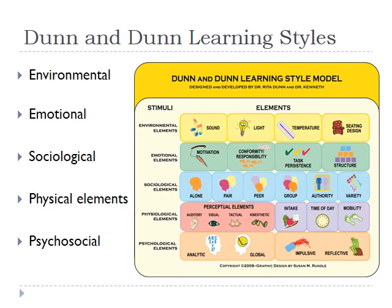Dunn and Dunn came up with these learning styles — it's pretty rudimentary, maybe a little silly because most of it is common sense. The bottom line: you have to meet certain needs or people can't think. You have to have a comfortable room, you can't be hungry, you have to want to learn. Some people learn better in groups, some people do better with a teacher talking and writing on the board, and then some people need variety. Auditory, visual, and tactile learning styles do make a difference.